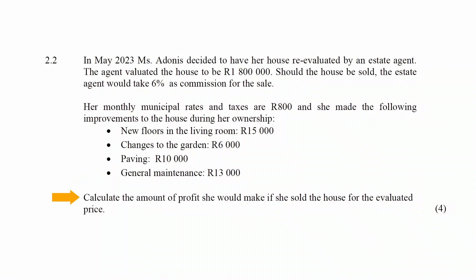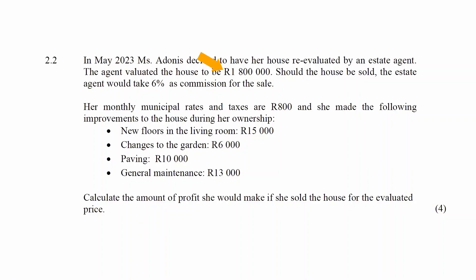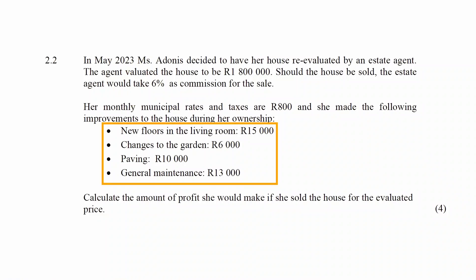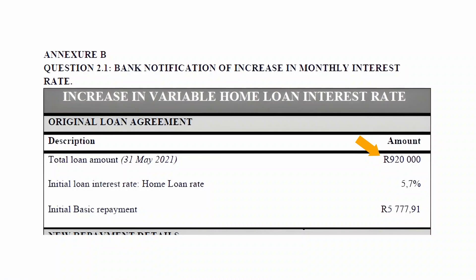We have to calculate the amount of profit she would make if she sold the house for the evaluated price. Profit is the positive difference between income and expense. In this case, the income is the selling price of 1,800,000 Rand. The expenses are the commission, the total municipality rates and taxes, the improvements made to the house, and the loan amount of 920,000 Rand.